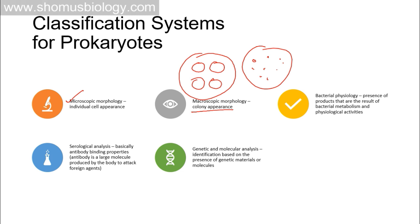Bacterial physiology — that means the presence of products resulting from bacterial metabolism and physiological activities — is also very important, which we can understand by looking at the bacteria under a microscope in certain environmental conditions. We check the physiology by observing what kind of structural changes occur in the bacteria when placed in a changing environment and how it responds by modifying its physiological structures.